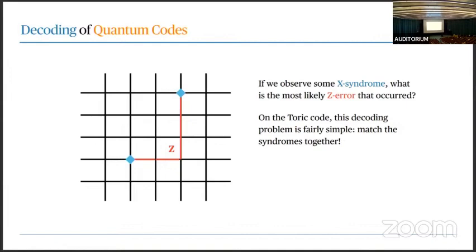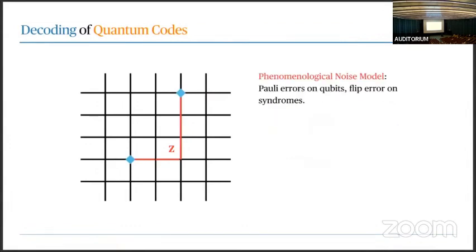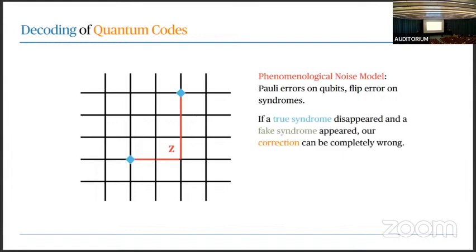In a more realistic setting, your measurement gadgets are also noisy and imperfect. Consider what's called the phenomenological noise model: you have Pauli errors on your qubits and potential flip errors on your syndromes. Suppose the true error has two true syndromes that should have been flipped, but when extracting syndromes in the lab, one syndrome disappears and a fake one appears. To your observation this looks like a completely valid syndrome pattern, and you would apply a completely wrong correction.